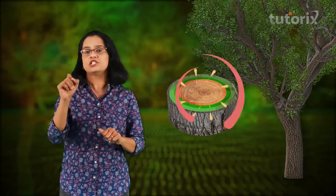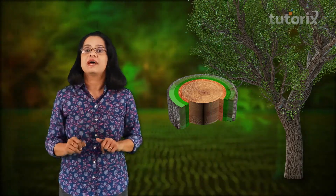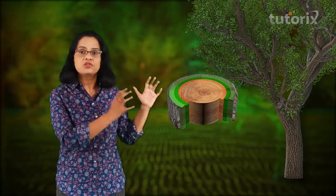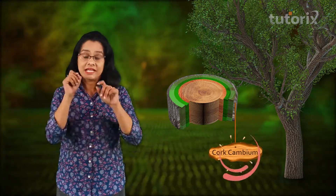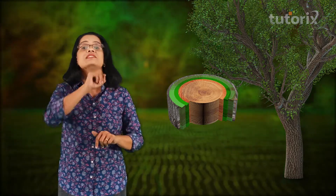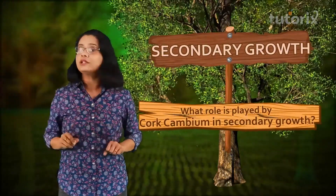Protective coverings have to be formed on the outer parts of the plant. This function is brought about by another secondary meristem which is formed in the cortex region of the tree. This secondary meristem, formed in the cortex region, is called cork cambium, and it plays a very important role during secondary growth.